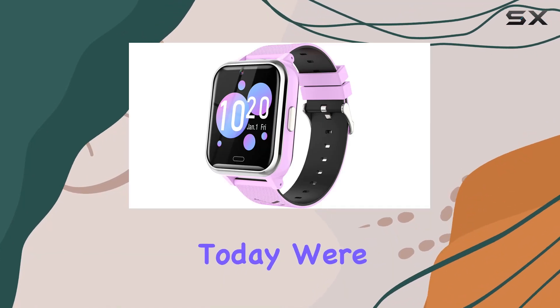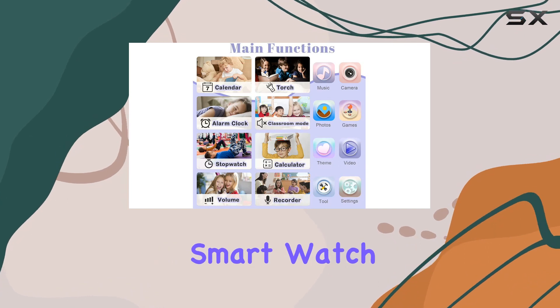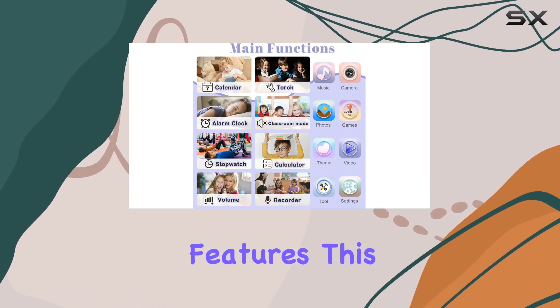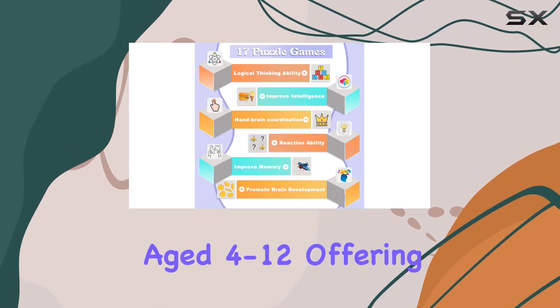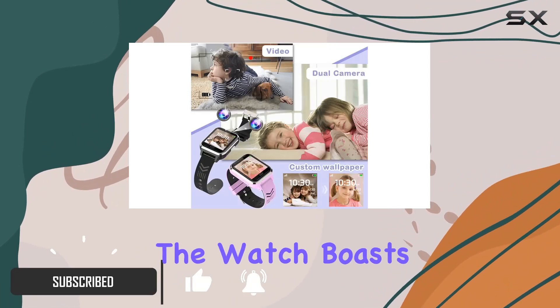Hey everyone, today we're diving into the world of kids smartwatches with the Igreeman Smartwatch packed with features. This watch is designed for children aged 4 to 12, offering a perfect blend of fun and education.